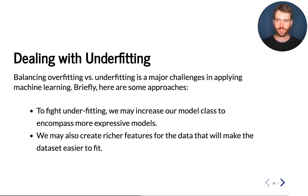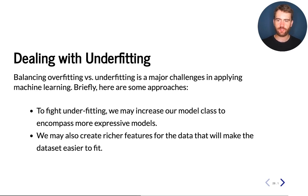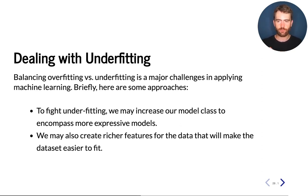For example, if this was a diabetes prediction problem and we knew that older men were particularly at risk, but our linear model could not combine the features 'man' and 'age', we could create this feature manually so that a linear model would be able to account for the fact that being an old man is an important risk factor and assign it a proper weight.